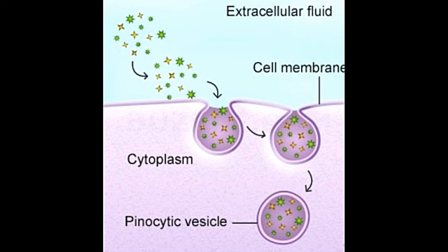Expenditure of energy — A large amount of energy is consumed in phagocytosis. Some amount of energy is generated in the form of ATP molecules in the pinocytosis of smaller lipids.